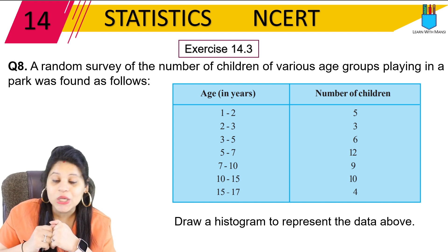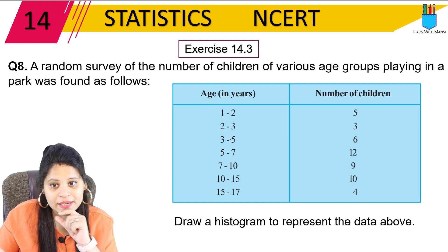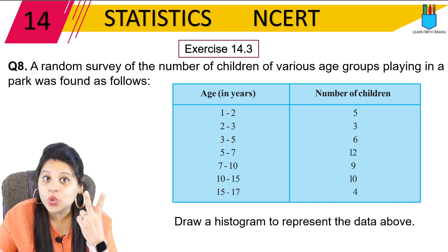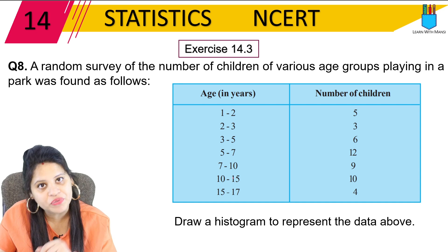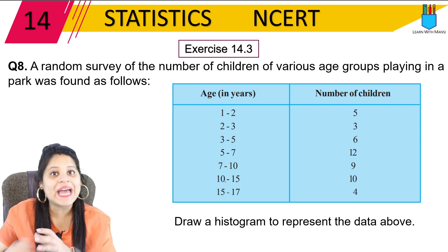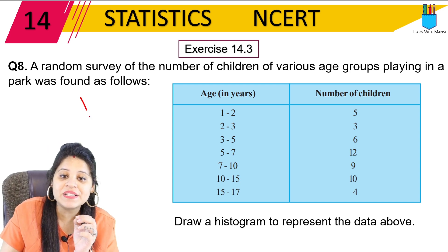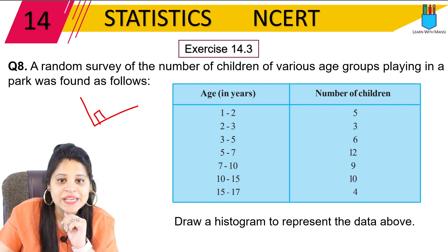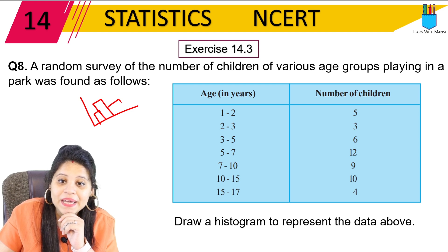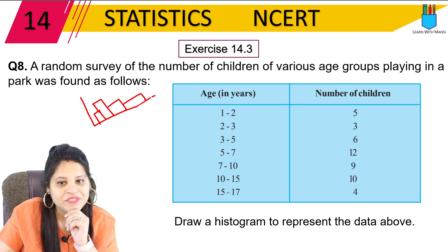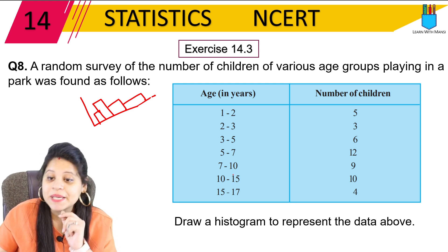But it's not this simple. Why not? How many gaps are there? 1-2 is a gap of 1, 2-3 is 1, 3-5 is 2, then 5-7 is a gap of 2, 7-10 is a gap of 3, 10-15 is a gap of 5 — so that means the gap is not continuous. When the class interval is like this, the width of the bars will be different.